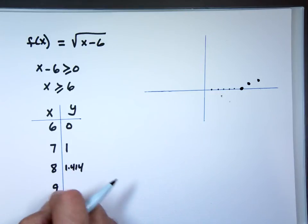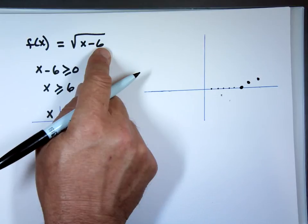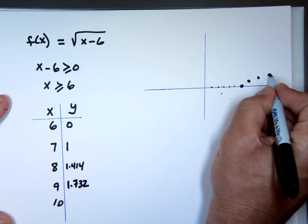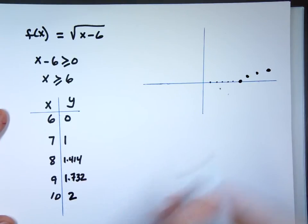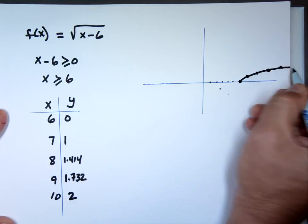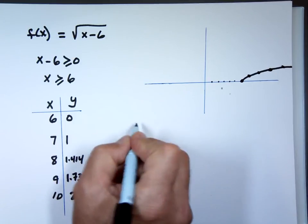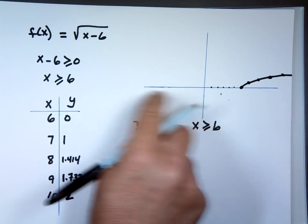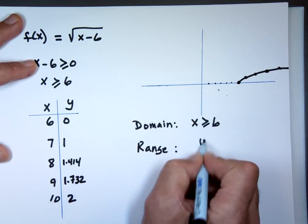When x is 9: square root of 3 equals approximately 1.732. When x is 10: square root of 4 equals 2. The graph keeps going and doesn't stop — all square roots look like that. The domain is x greater than or equal to 6, and the range is y greater than or equal to 0.